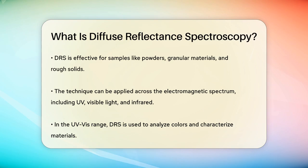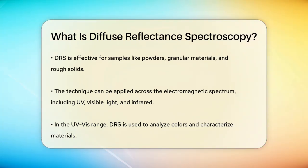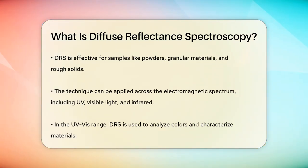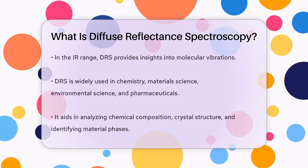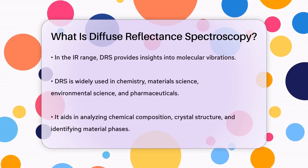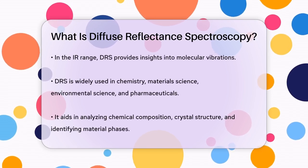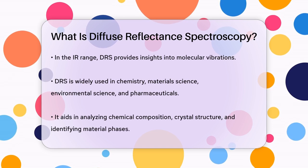The technique can be used in different parts of the electromagnetic spectrum, such as ultraviolet (UV), visible light, and infrared. For example, in the UV-VIS range, it's often used to analyze colors and characterize materials, while in the IR range, it provides information about molecular vibrations.